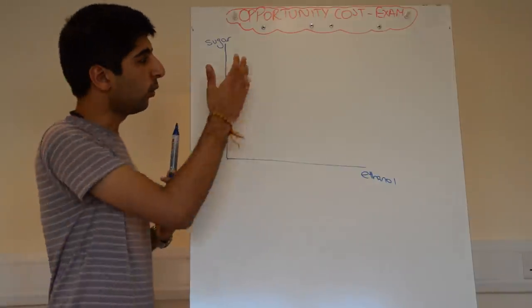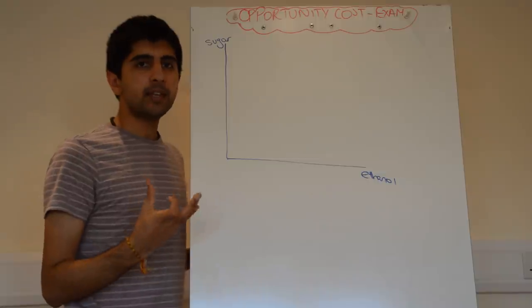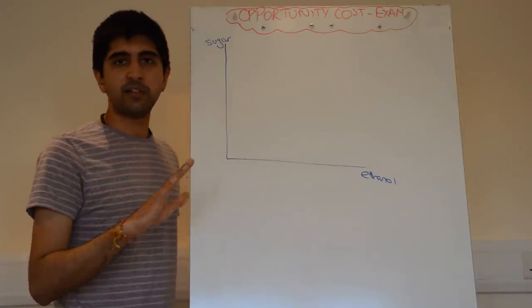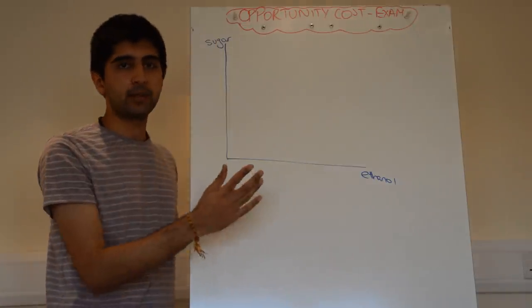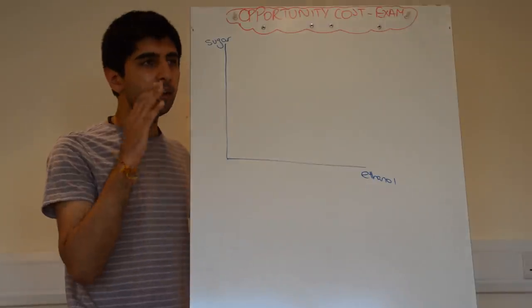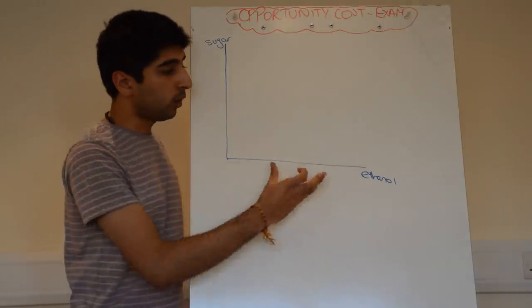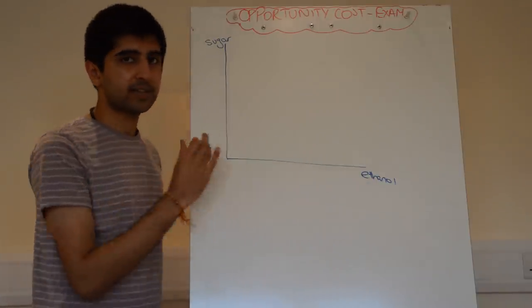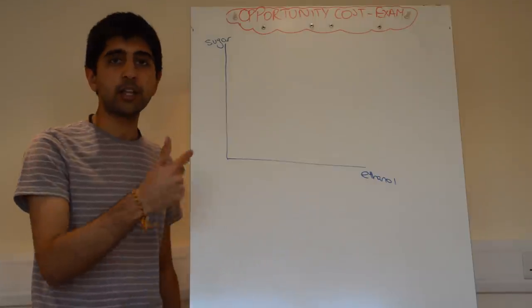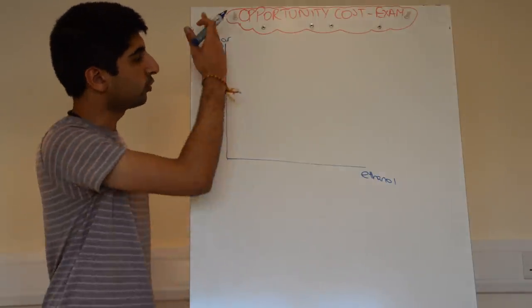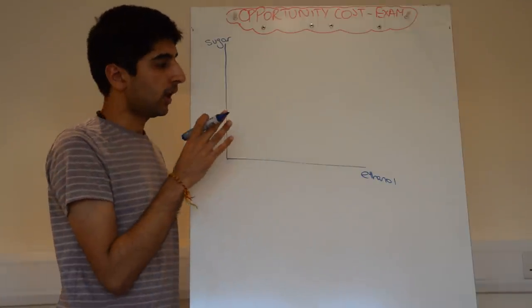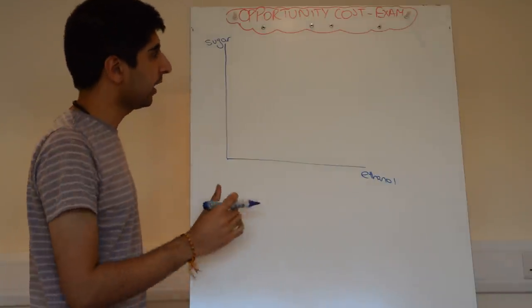So how would you start? Well firstly, you would always draw your axes. When you draw a PPC diagram, your axes need to be labelled according to the information given to you in the case study. What are the two choices facing whatever firm you're trying to analyse? Those two choices need to go on the axes. I would recommend whatever you're looking to increase production of — whatever clue there is in your case study as to what is wanting to be increased — that thing should go on the x-axis. In the case study, there was a lot of discussion about the increased production of ethanol, in which case ethanol should go on the x-axis. Whatever you're trying to increase production of, put on the x-axis. So you draw your axis, label it properly — it needs to be fully labelled according to the products or items talked about in the case study.